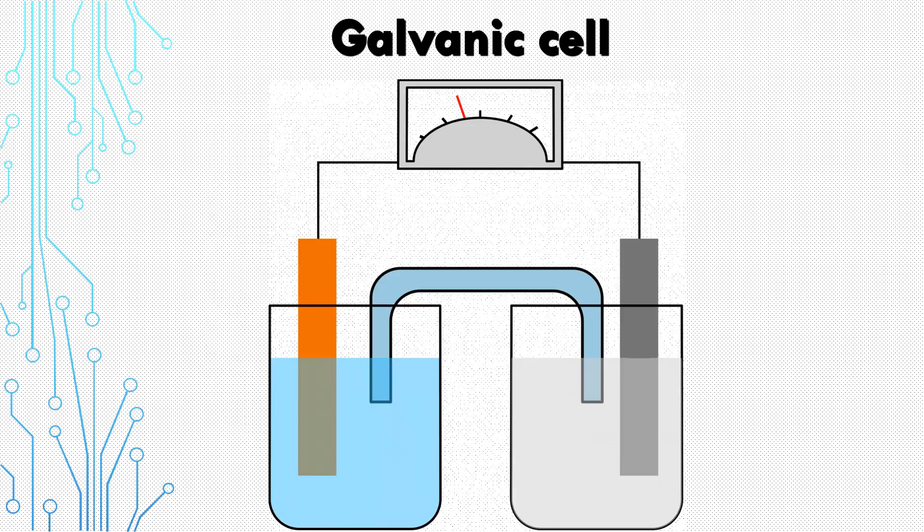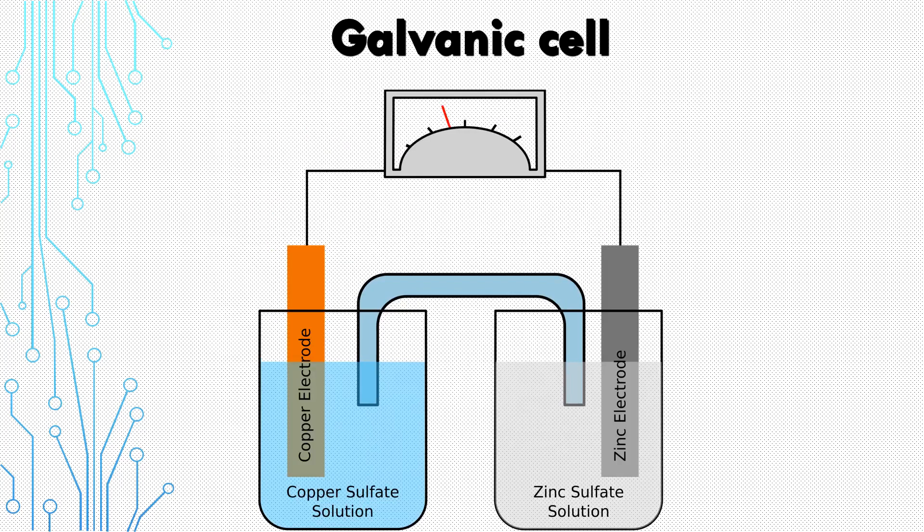A galvanic cell is generally defined as an apparatus that generates electrical potential. One of the interesting parts of it is the flow of the whole ions instead of the flow of electrons. We've got two electrodes: the zinc electrode acts as the anode, and the copper electrode acts as the cathode.